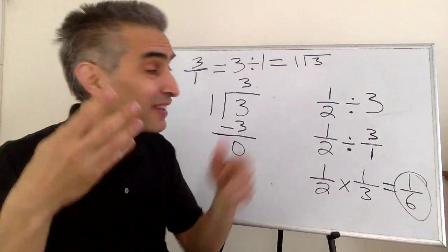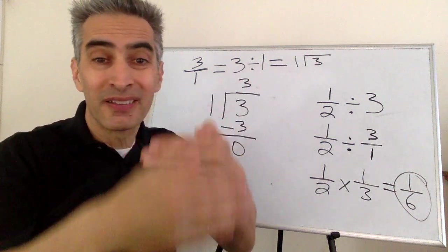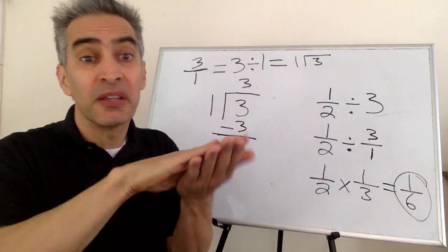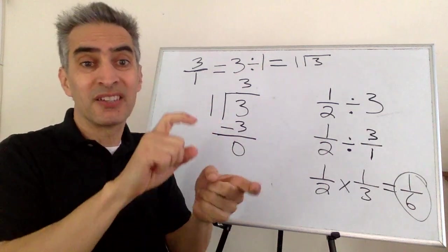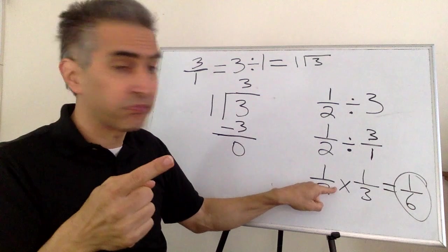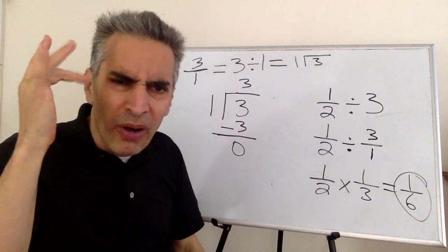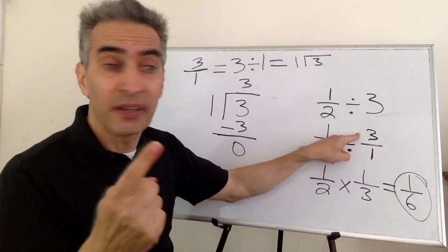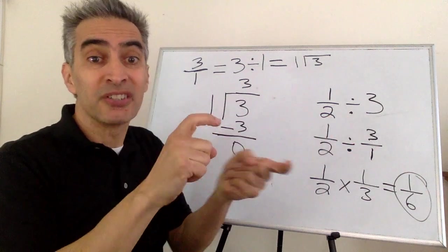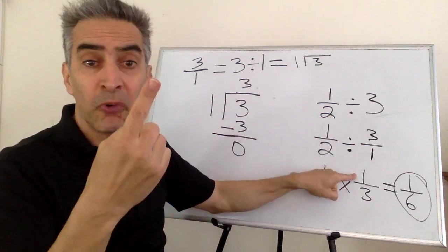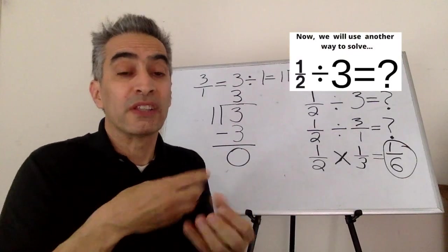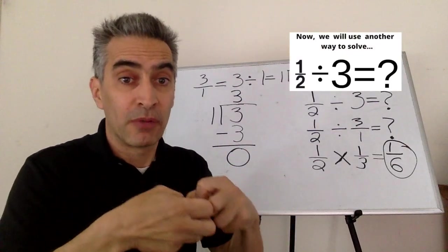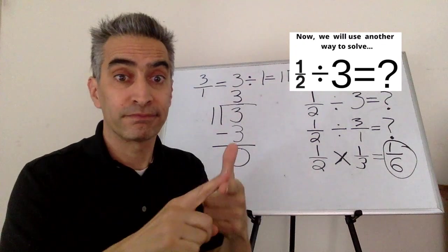Many people see this process and they can't understand it. They become confused. This division sign becomes multiplication. Why? This three over one flips and becomes one-third. Well, why does that happen? Now we're going to solve the same problem using the second way, using pictures.